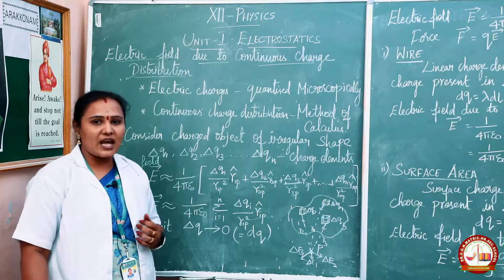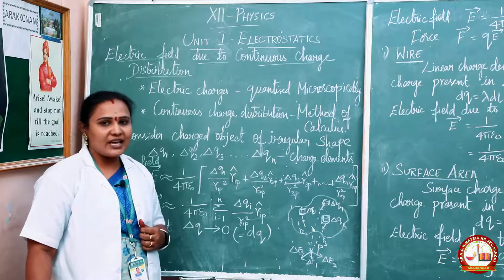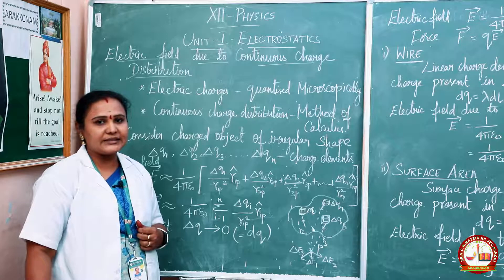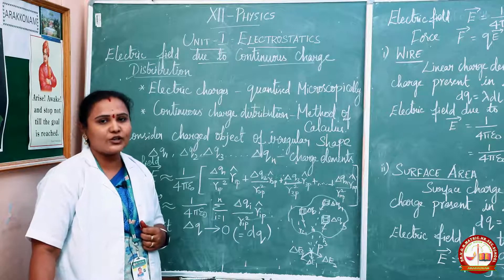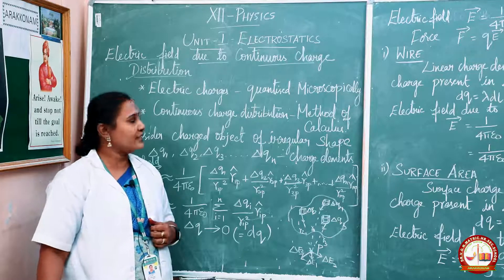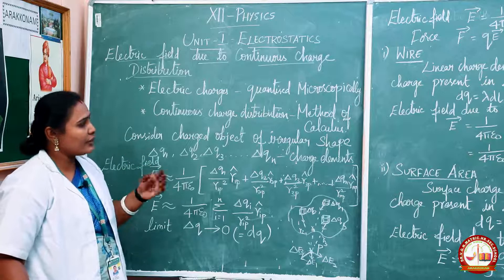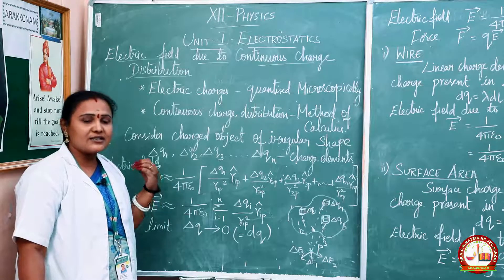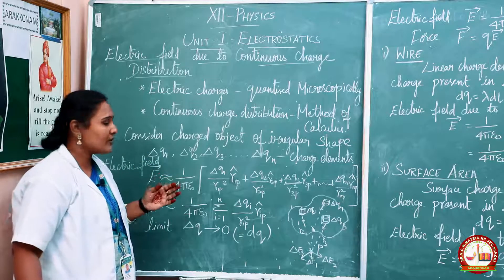In case if it is a charged wire or charged sphere, we couldn't use that point charge expression for that. It is very difficult. So we have to consider the charge is uniformly distributed on the given surface. If it is uniformly distributed, we have to use the continuous charge distribution, and for that we will be using the method of calculus.